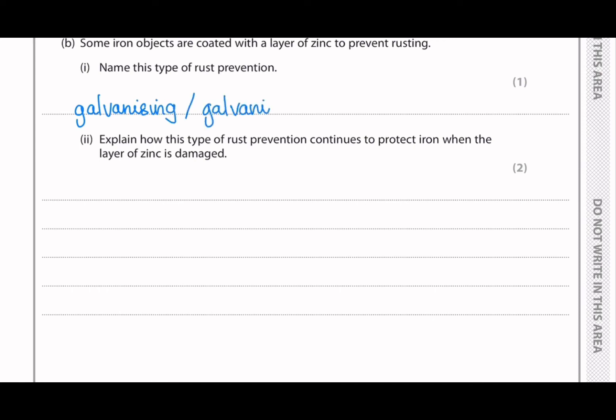This is a process where you coat iron with a metal that is more reactive than iron to prevent iron from reacting with oxygen and water. And then the second part asks to explain how this type of rust prevention continues to protect iron when the layer of zinc is damaged. So this is related to knowledge in the reactivity series subtopic. So in the reactivity series, they rank different types of metals in terms of its reactiveness or reactivity. And zinc is higher in the rank than iron.